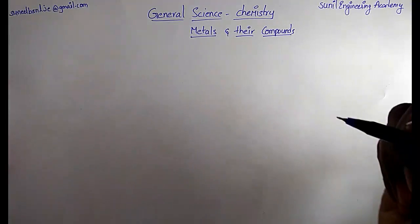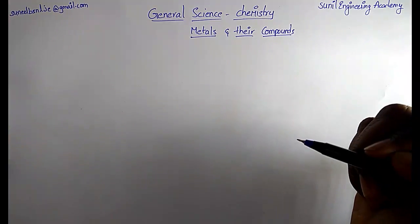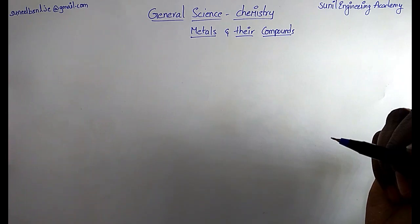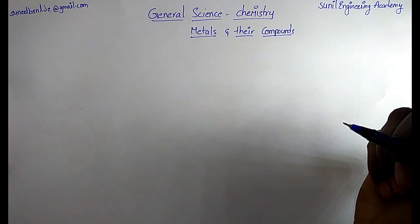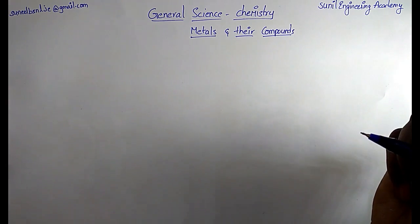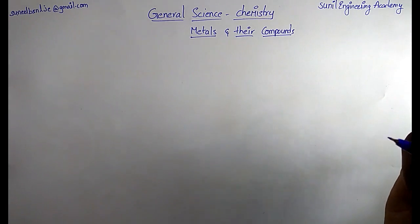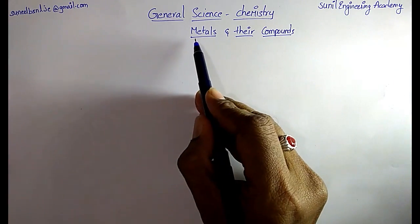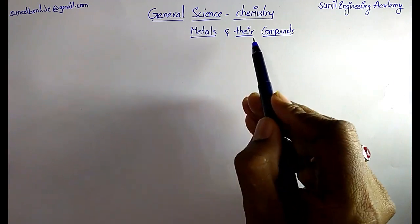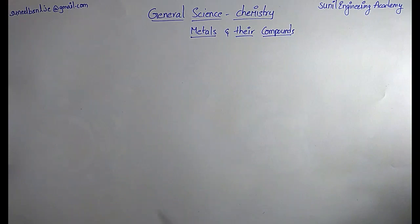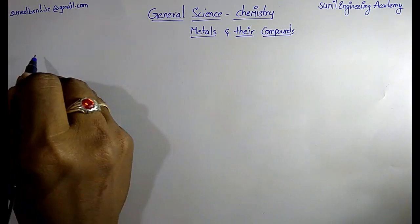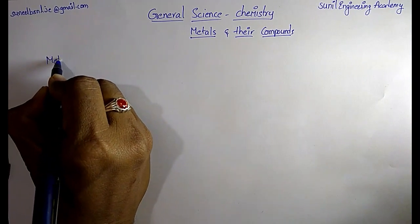In chemistry we have already completed three topics: atomic structure, fuels and combustion, and acids, bases and salts. Now the next topic is metals and their compounds. First of all, what are metals?